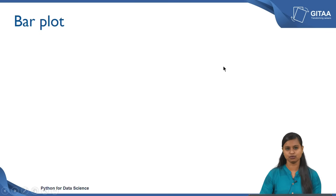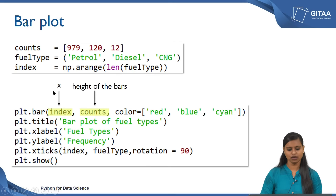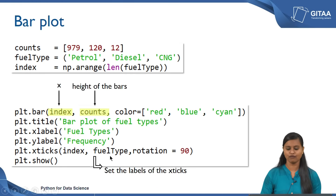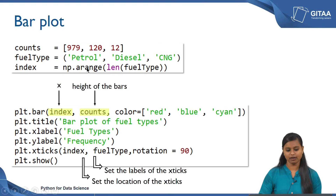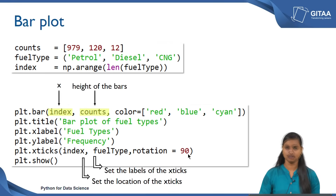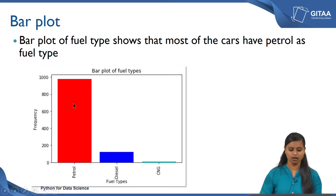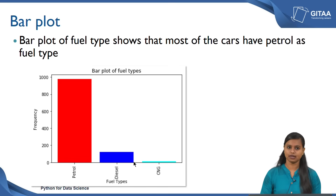To add labels to each bar on the x axis, we use x ticks. We set the tick labels using the fuel type variable containing petrol, diesel, and CNG, and set rotation equal to 90 so all labels appear at 90 degrees. Looking at the output, the first bar corresponds to petrol fuel type, and it is clear that most cars — around 900 — have petrol as their fuel type, while only a few cars have diesel or CNG.